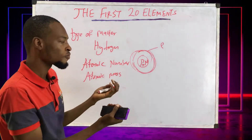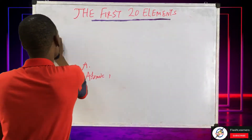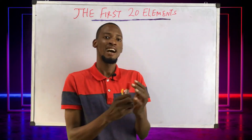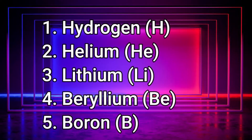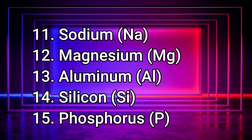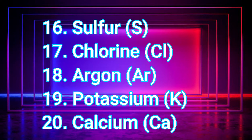Each element has its own number, so we need to go through the first 20 elements. The first 20 elements are: hydrogen, helium, lithium, beryllium, boron, carbon, nitrogen, oxygen, fluorine, sodium, magnesium, aluminium, silicon, phosphorus, sulfur, chlorine, argon, potassium, and calcium.